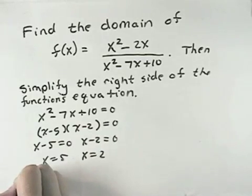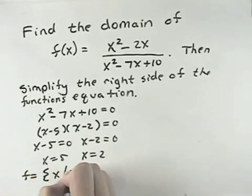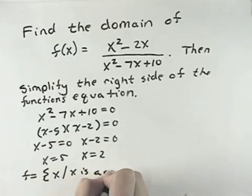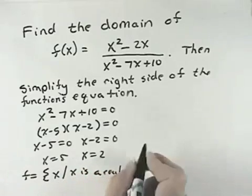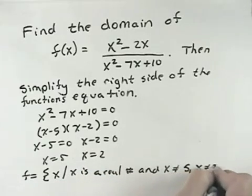So the way we can write the domain is all real x such that x is a real number, and x does not equal 5 and x does not equal 2.